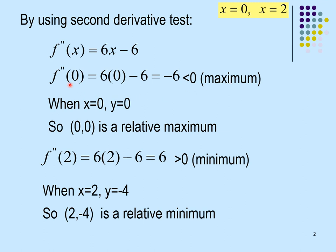When the second derivative is less than 0, it indicates a relative maximum. Next, substitute x = 2 into the second derivative. You get 6, which is greater than 0, indicating a relative minimum. Substitute x = 2 into f(x) to get y = −4. So the point (2, −4) is a relative minimum. Remember: second derivative less than 0 means relative maximum; greater than 0 means relative minimum.